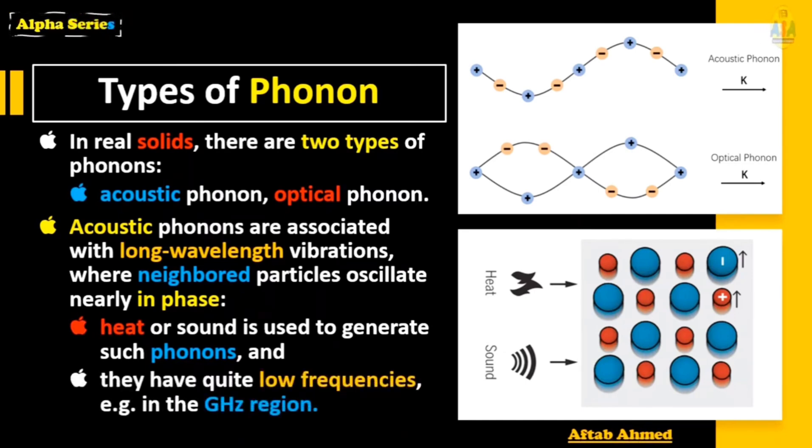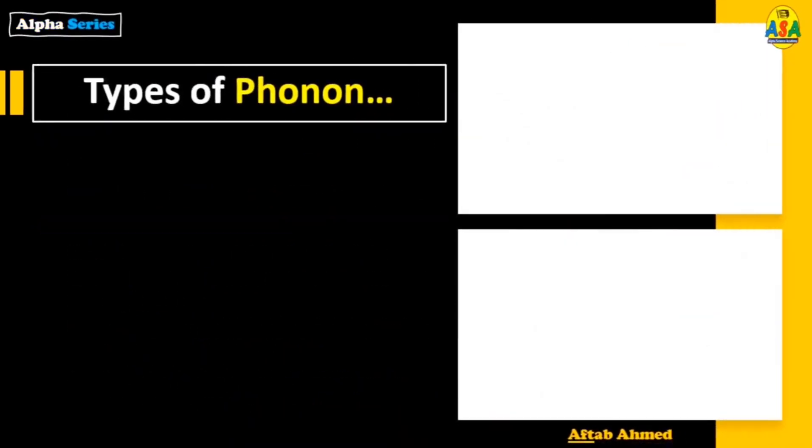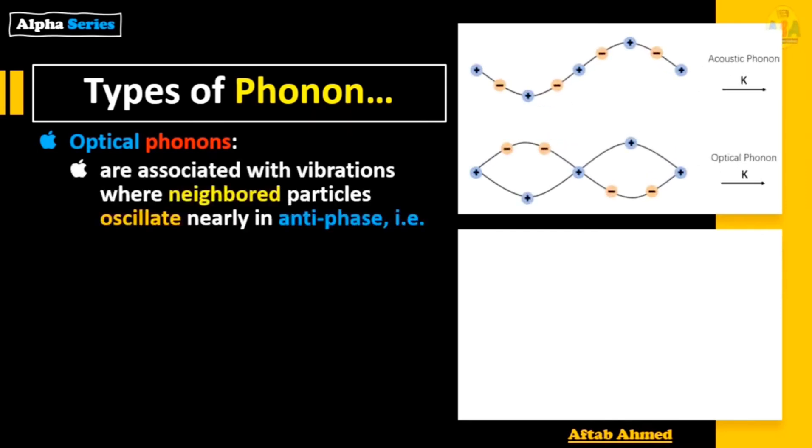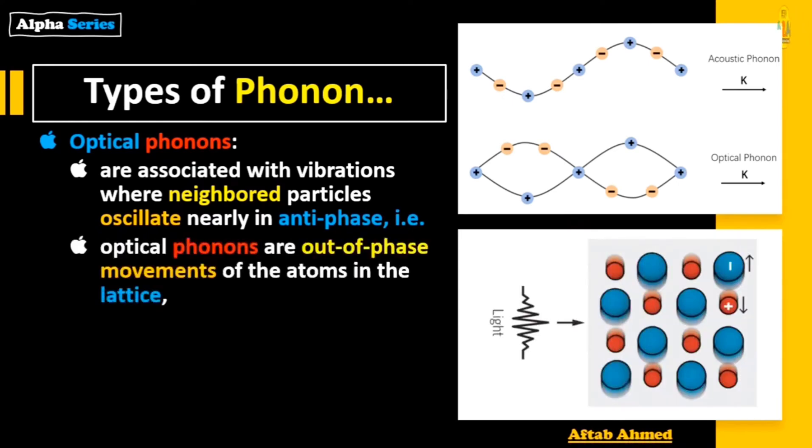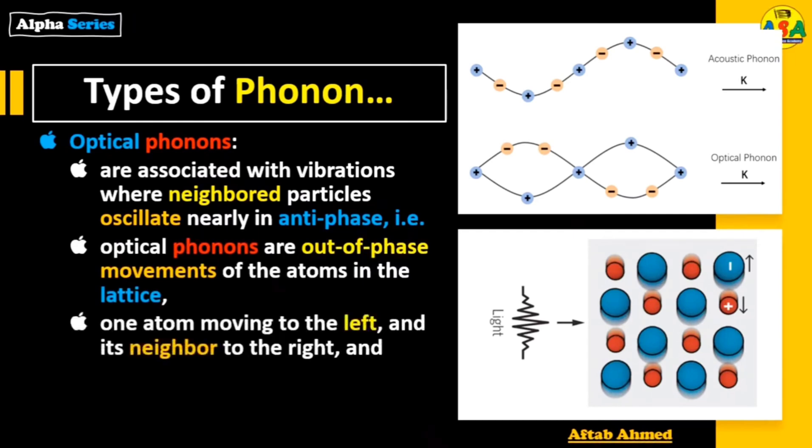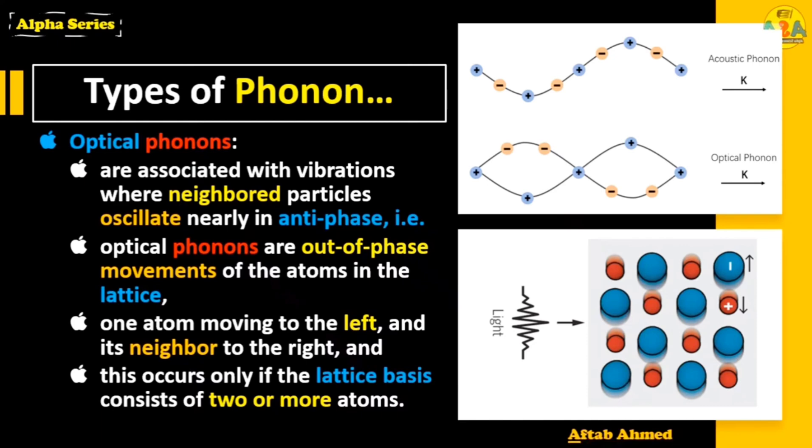Optical phonons are associated with vibrations where neighbor particles oscillate nearly in antiphase. That is, optical phonons are out of phase movements of the atoms in the lattice, one atom moving to the left and its neighbor to the right. This occurs only if the lattice basis consists of two or more atoms. Light is used to generate such phonons.